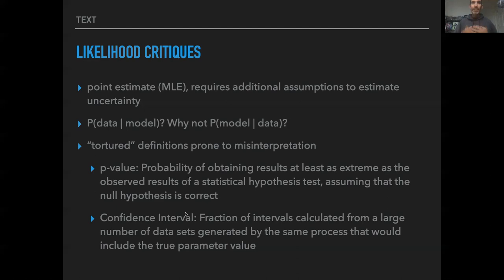And more to the point, if you could calculate the probability of the model given the data, then you could do things like say, what's the probability that the true value falls in this interval? What's the probability that this value is bigger than zero, less than zero? You could do those tests. So these kind of convoluted definitions come from the fact that we've been thinking about the probability of the data, not the probability of the model.